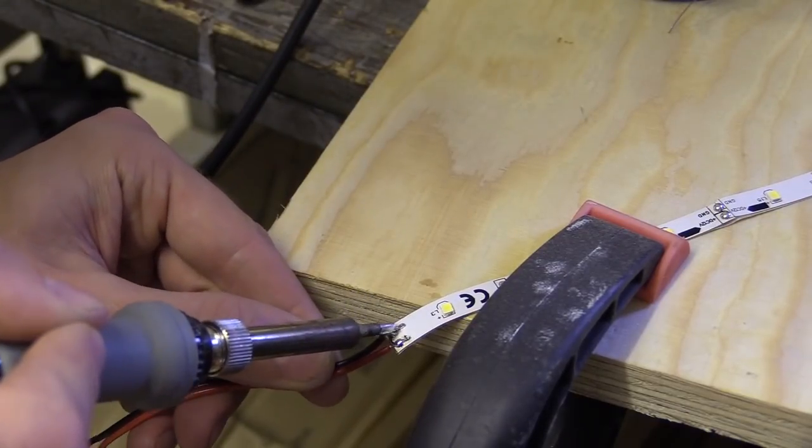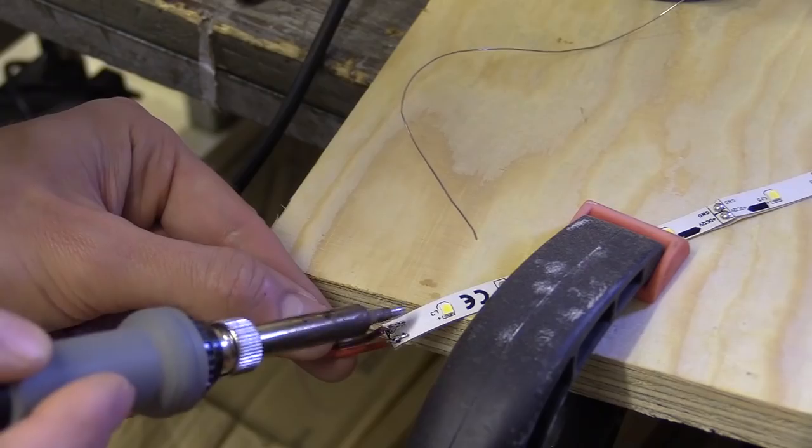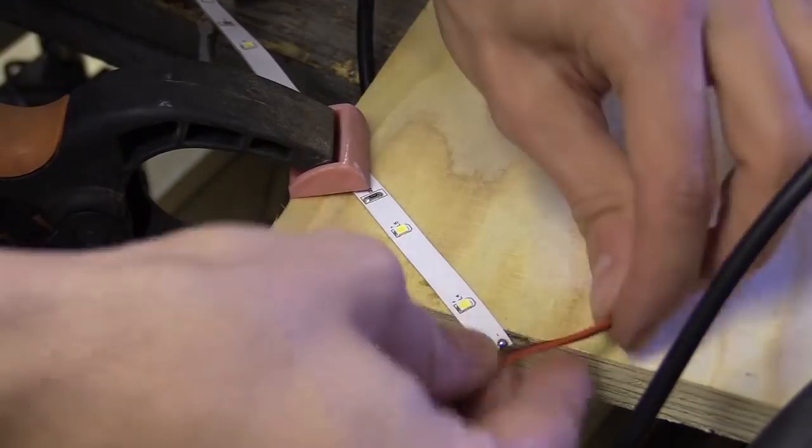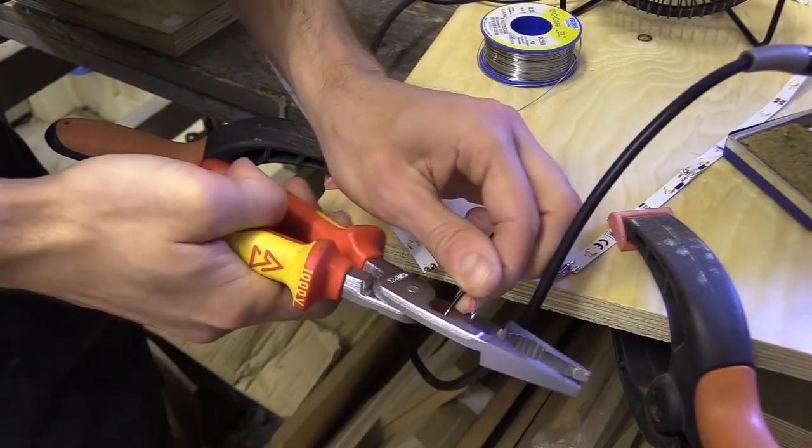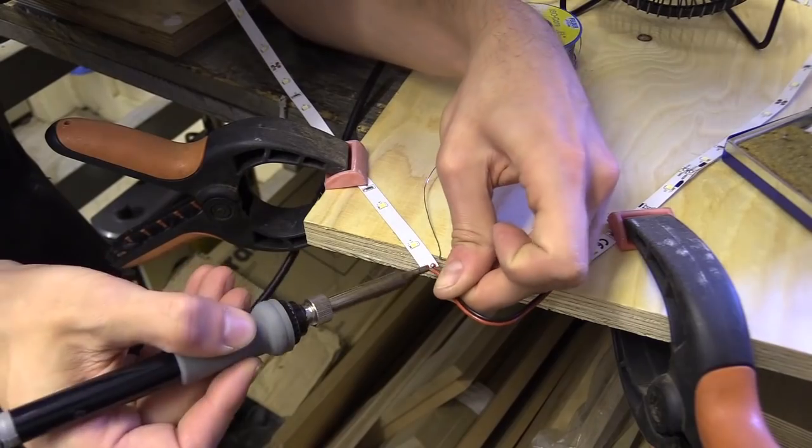To join these pieces, you just have to hold the two tinned sections together and press your soldering iron at the right point, at which point the solder should melt and the two surfaces merge together, after which you remove the soldering iron and let it cool.